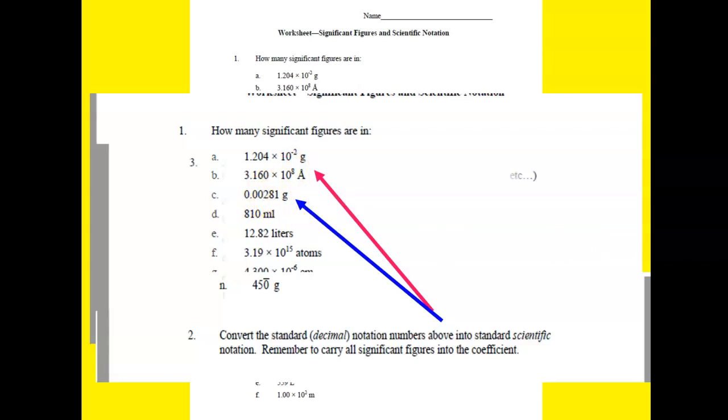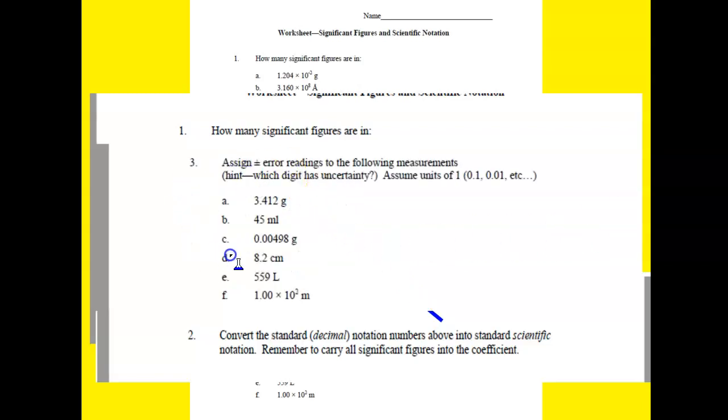When you're finished with that, the last portion of the worksheet asks you to assign the error readings to the measurements. What that means is, which digit is uncertain? We know that it is the last digit. For example, for this one, the last digit is the thousandths place. Therefore, this is the uncertainty, the error reading, where it can either go plus or minus 0.001. You're going to tell me its place, and then of course you have your unit.